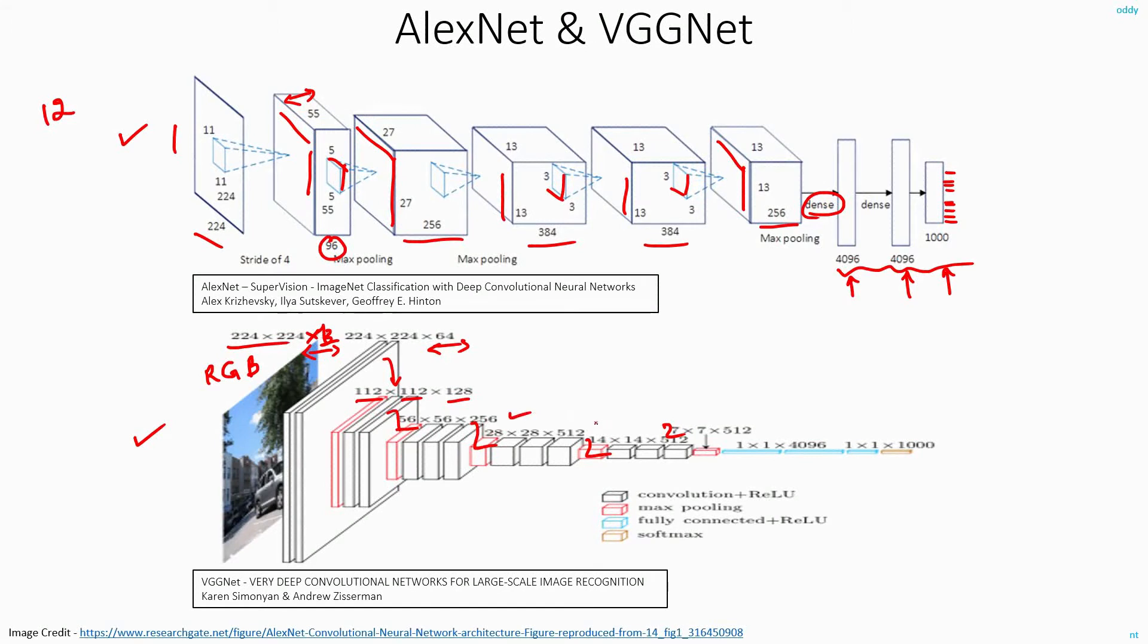And your depth is 256 here, 512, and finally 512. This is the output of your all convolution and pooling layers. And these are your fully connected layers.